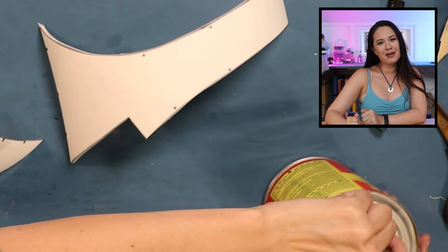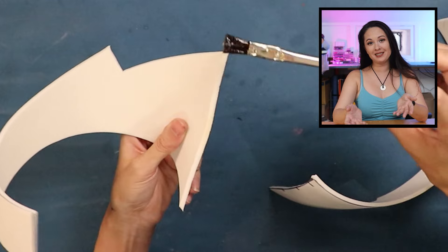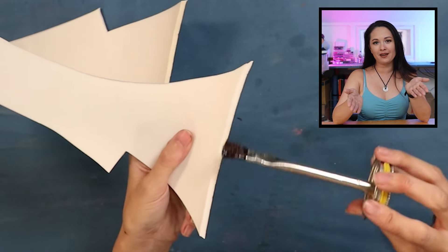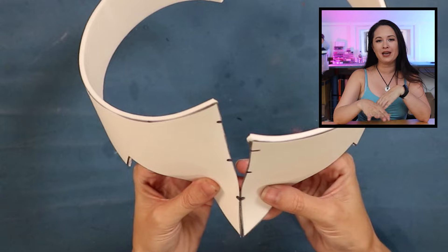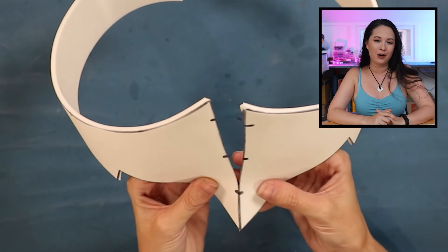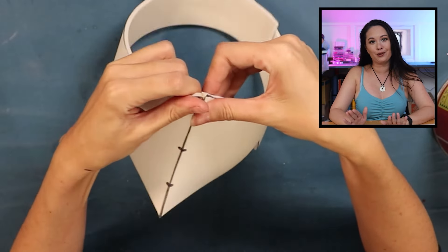And it's contact cement, barge glue time. Don't forget to add glue to both sides of the pieces you're attaching together, and make sure you wait a couple minutes for that glue to become tacky instead of wet. It's going to make this a lot easier to work with.